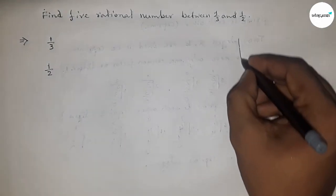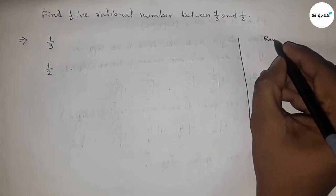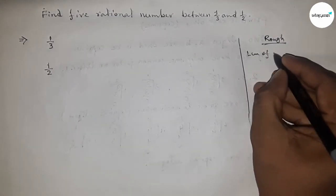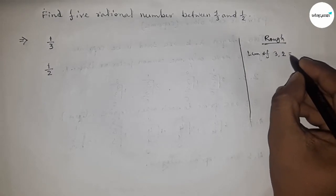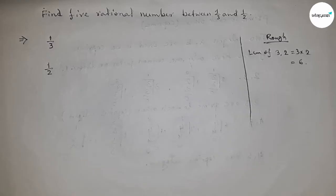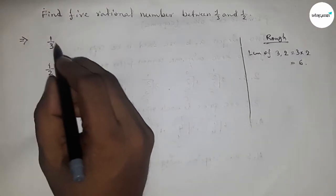Okay, now roughly discussing some calculation here. So first we have to find out the LCM of two and three, and LCM of two and three is six. We have to make the denominator of both rational numbers to six.